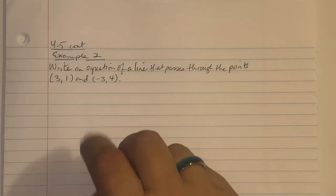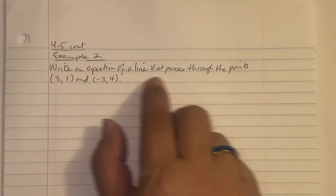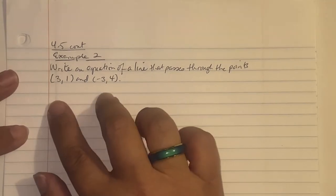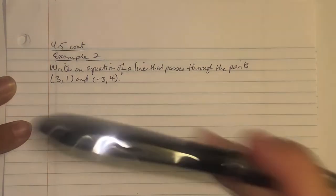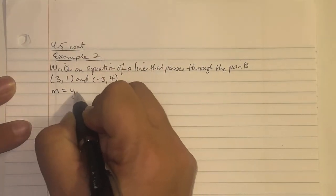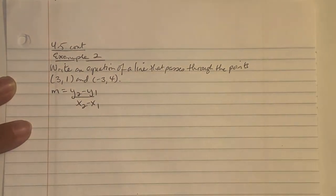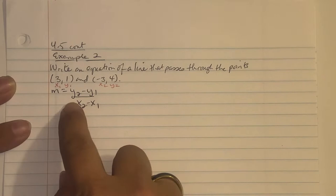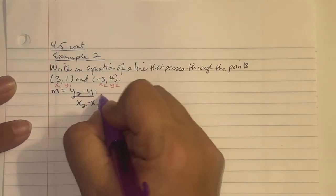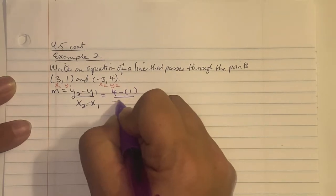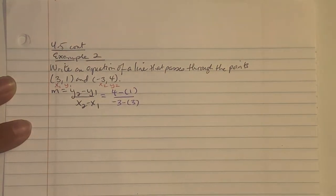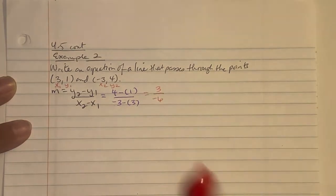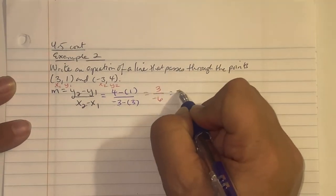Example 2: Write an equation of a line that passes through the ordered pairs (3, 1) and (-3, 4). This time they gave us two ordered points but no slope, so first we need to find our slope. The slope formula is (y₂ minus y₁) over (x₂ minus x₁). Substituting: (4 minus 1) over (-3 minus 3) equals 3 over -6, which reduces to negative one-half. So m equals negative one-half.